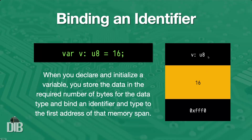This represents what's going to happen with this line of code. It's going to be compiled basically into instructions to store this value: first allocate the necessary memory — in this case the data type tells us we need to allocate one byte — we write the value 16, and then we bind this identifier and data type to this address.